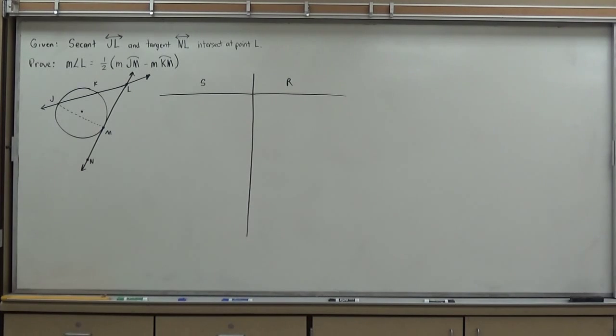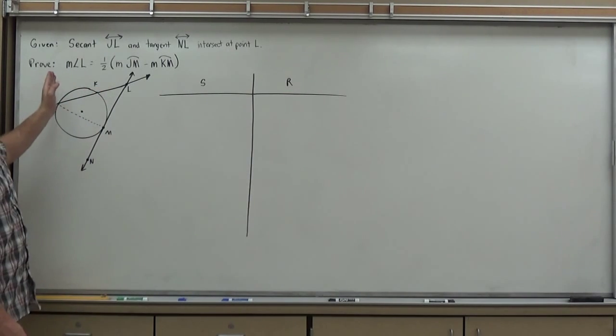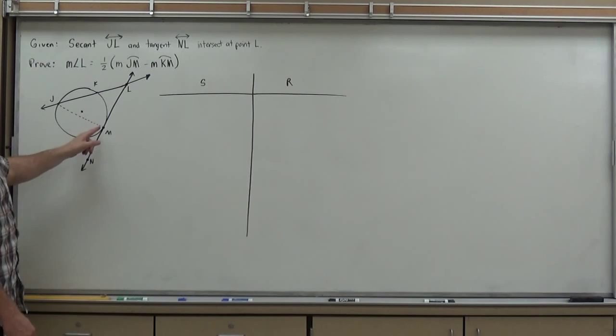This is going to actually prove one of the theorems that we've been using. It says secant JL and tangent NL intersect at point L on the outside. And, that the measure of angle L should be one half arc JN minus arc KN. Okay? So, let's try to prove that. So, not all of these. But, I would say the majority of the proofs that you do in this chapter are going to require you to make some sort of triangle. Because, that's what's going to really allow you to open up into a lot of your theorems.